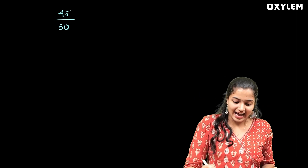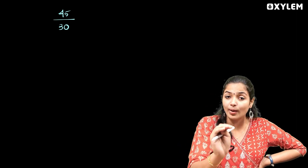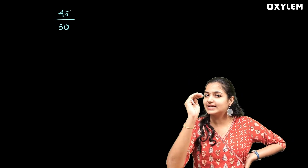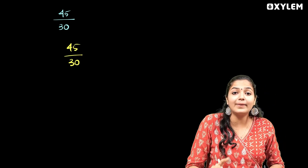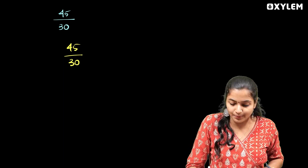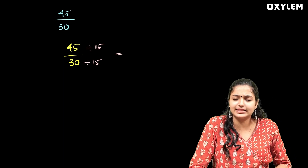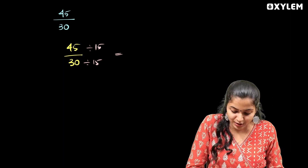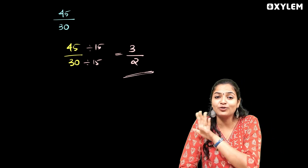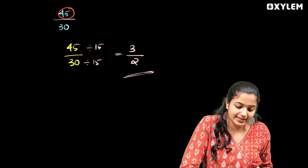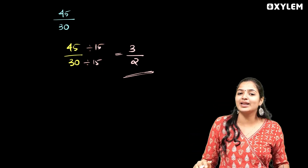Now let's use the Highest Common Factor method. The highest common factor of 45 and 30 is 15. We divide both by 15. 45 divided by 15 is 3, and 30 divided by 15 is 2. So the standard form is 3 by 2.